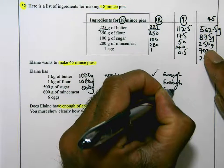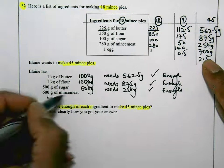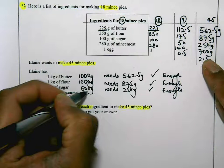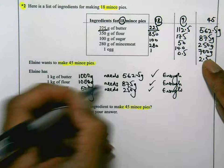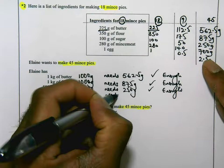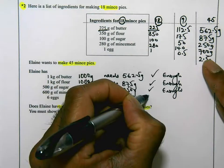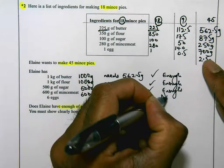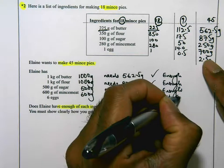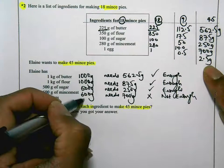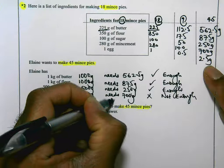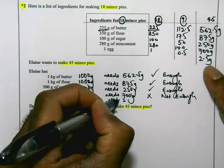700 grams of mincemeat, and she only has 600 grams of mincemeat. She needs 700 grams. So no, she does not have enough. And finally, the eggs. She has 6 eggs, she needs 2.5. She does have enough.